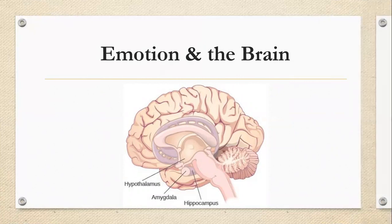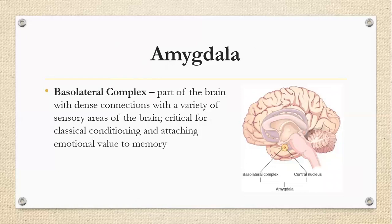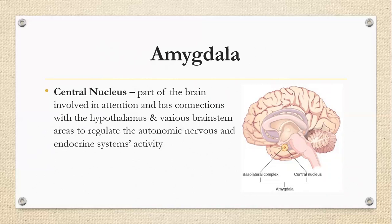Let's take a look at the amygdala first. The amygdala is composed of various sub-nuclei, including the basolateral complex and the central nucleus. The basolateral complex is the part of the brain with dense connections with a variety of sensory areas, and it is critical for classical conditioning and attaching emotional value to memory. The central nucleus is involved in attention and has connections with the hypothalamus and various brainstem areas to regulate the autonomic nervous and endocrine system's activities.